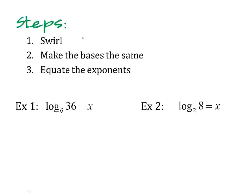Remember, we do the swirl. So remember, if it's log base a of b equals x, we do the swirl. So we write it in exponential form, so a to the x equals b. Write it in the swirl, then we make the bases the same, and then we equate the exponents. If the bases are the same, we can just set the exponents equal. You'll see what I mean here in a minute.